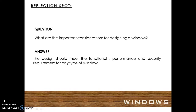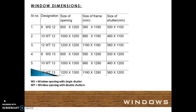The design should meet the functional performance and security requirements for any type of window. The dimensions that are ideal for window design are as stated in the slide, where WS means window opening with single shutter and WT means window opening with double shutters. For example, if you have a window of opening size 600 by 1200 mm with a single shutter, the size of the frame should be 590 by 1190 mm and the size of the shutter would be 500 by 1100 mm.